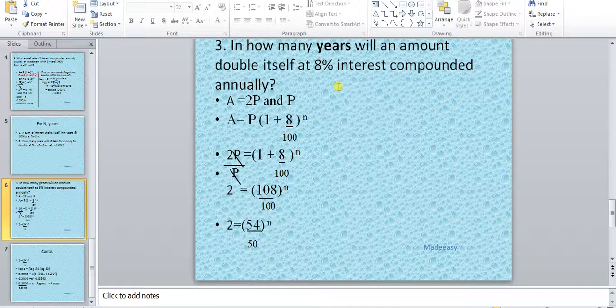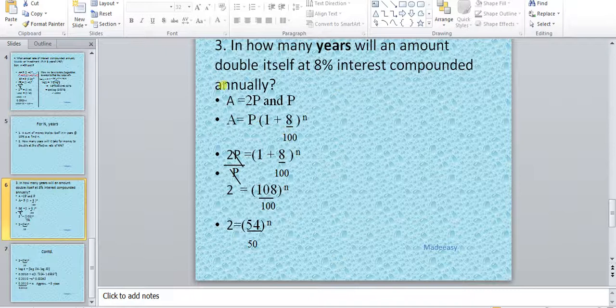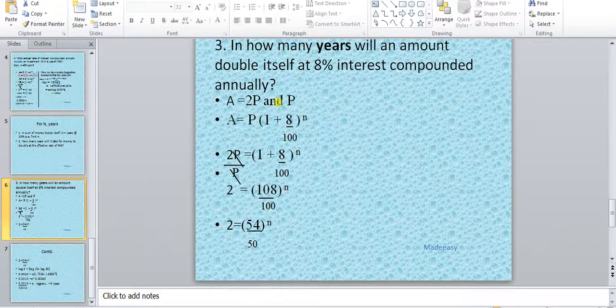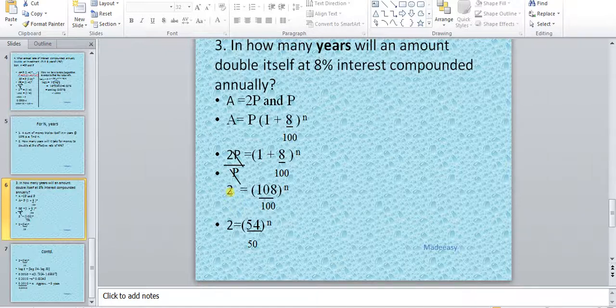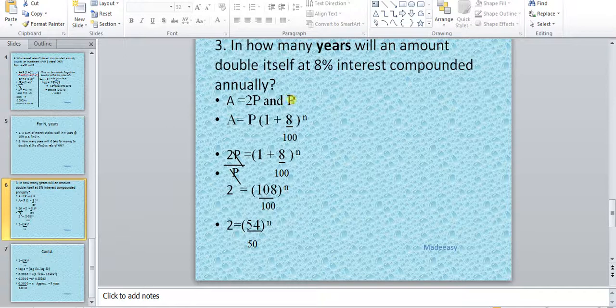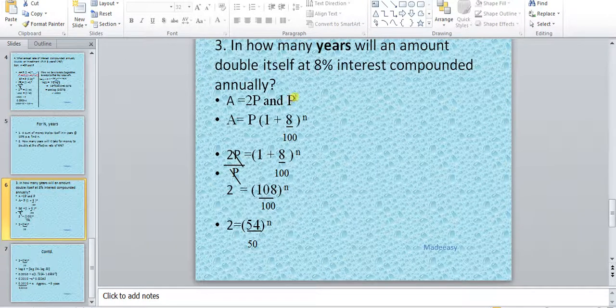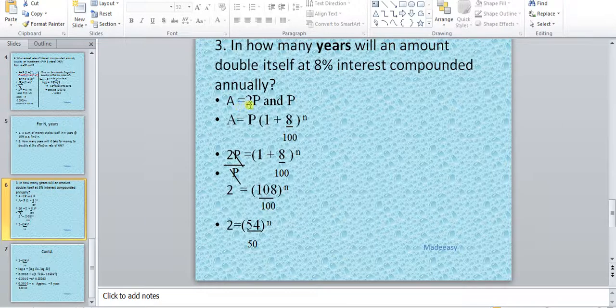When asked to find n, use the same method. We assume that the principal is P. We may use 100 also instead of P, but the result would be the same. If principle is P, it has to be double of it, meaning the amount would be 2P.